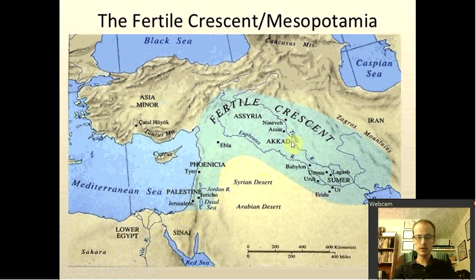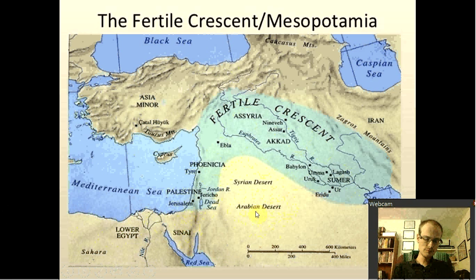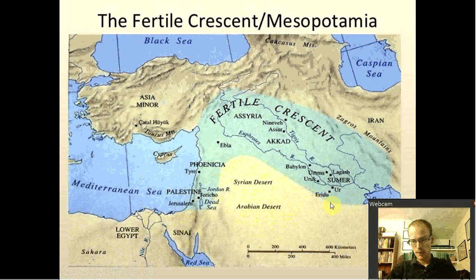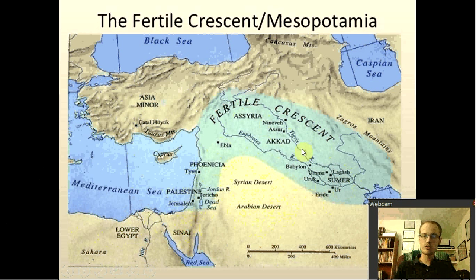Once you go out of this area, it's just desert. All this right in here, as you can see, is the Arabian Desert. It's just amazing how you go from so green in here to so dead out here. In recent years it has become more desert, but in ancient times this whole sliver in here was real green.